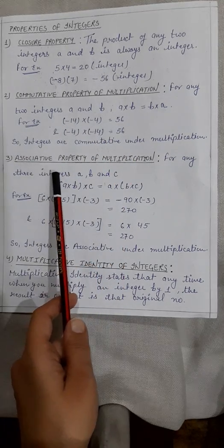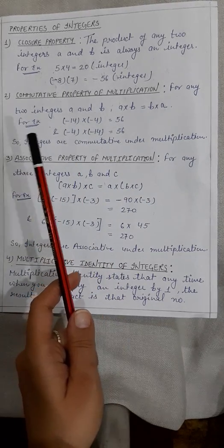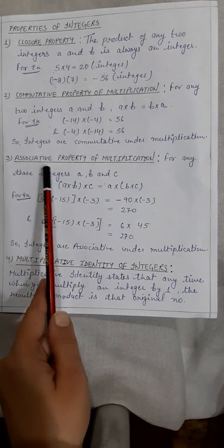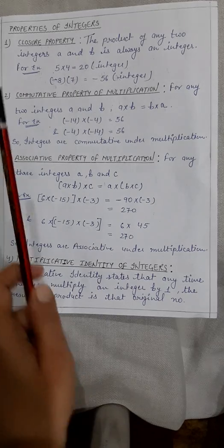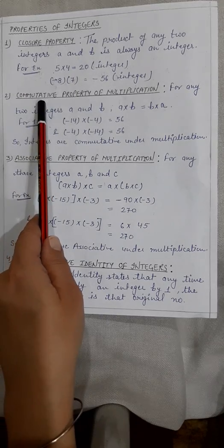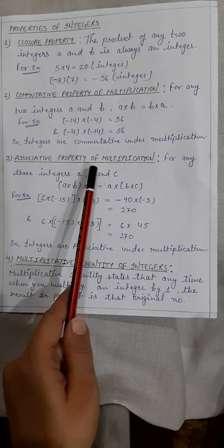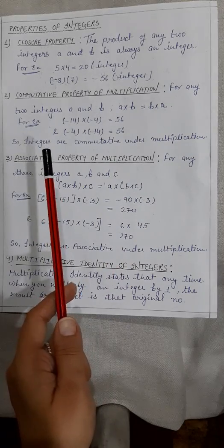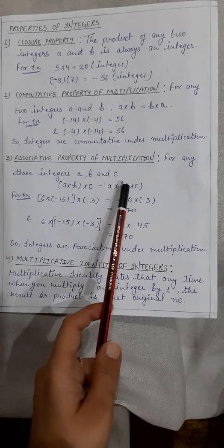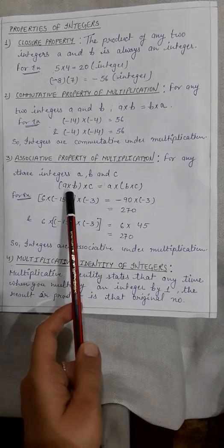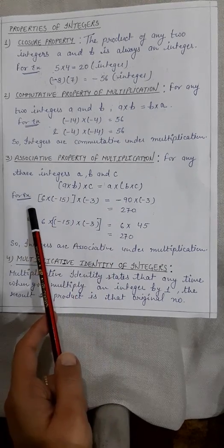Third is the associative property of multiplication. The difference from commutative property is that in commutative property we take only two integers, but in associative property we take three or more integers. For any three integers a, b, and c, while changing the order of multiplication, the answer will come the same. Let's check.